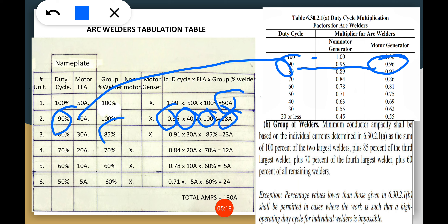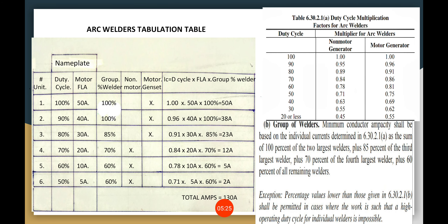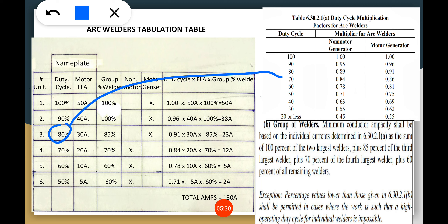For the third unit: 80% duty cycle — motor generator gives 0.91 from the table — times 30 amperes times 85% group welder factor = 23 amperes.